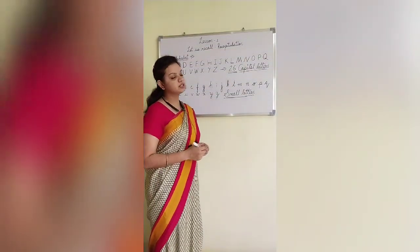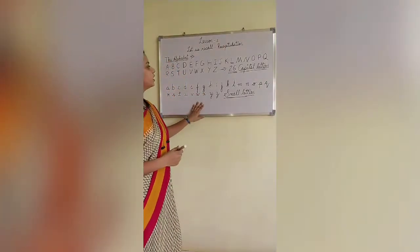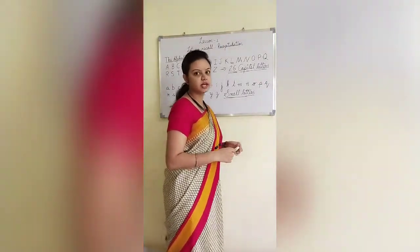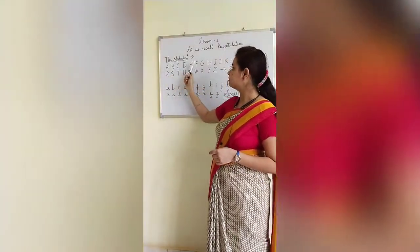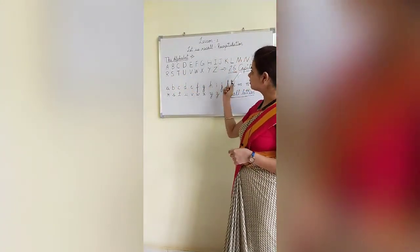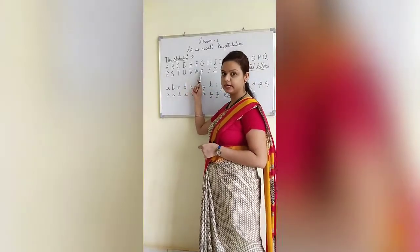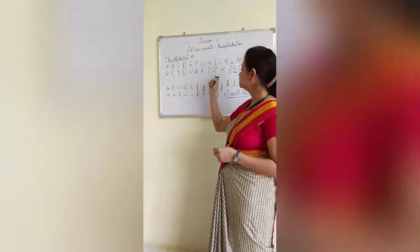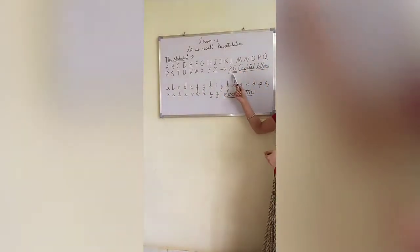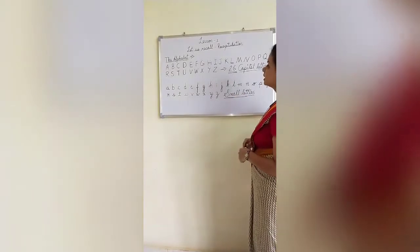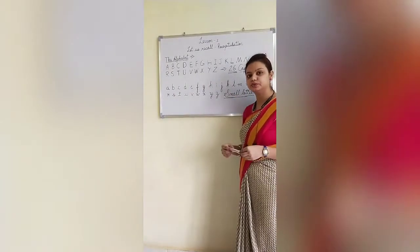So, in your first lesson, we are just recalling the alphabet — how many alphabets are there, and you should know the alphabet starting from A to Z. How many are there? There are 26.